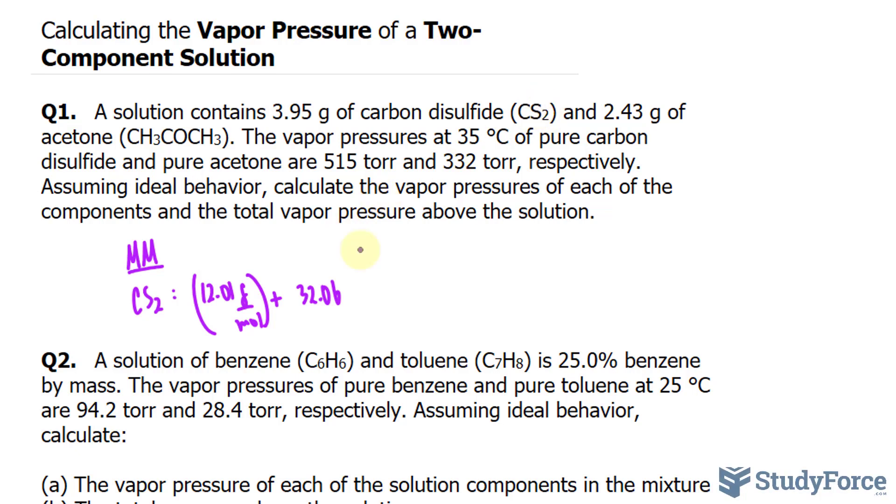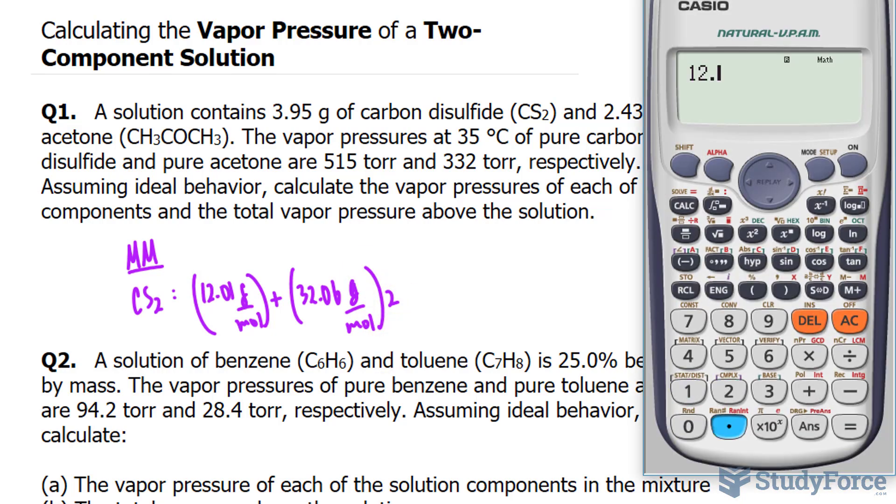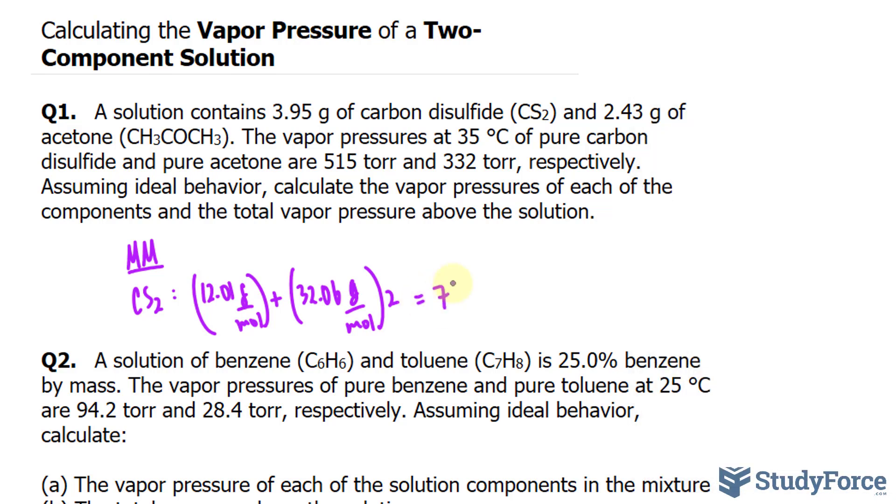So grams per mole times two. Let's go ahead and do that quickly. 12.01 plus 32.06 times two gives us 76.13 grams per mole. I'll flip this ratio where I have the moles at the top, and I'll indicate that with these arrows. So I have one mole at the top, and 76.13 grams.